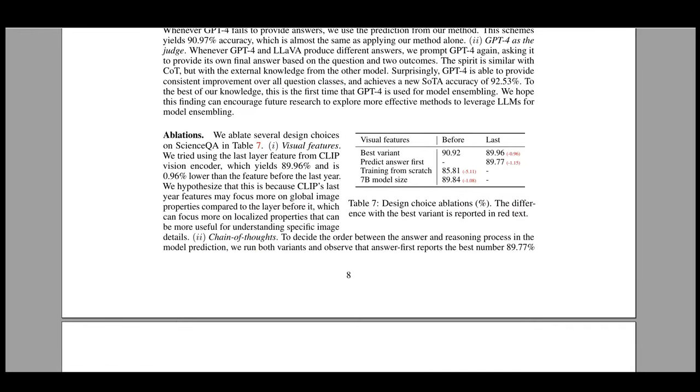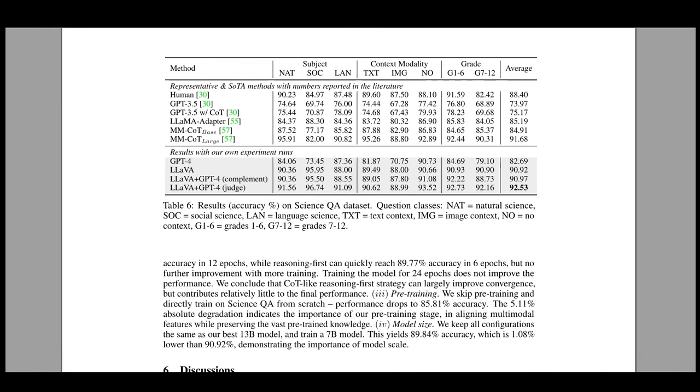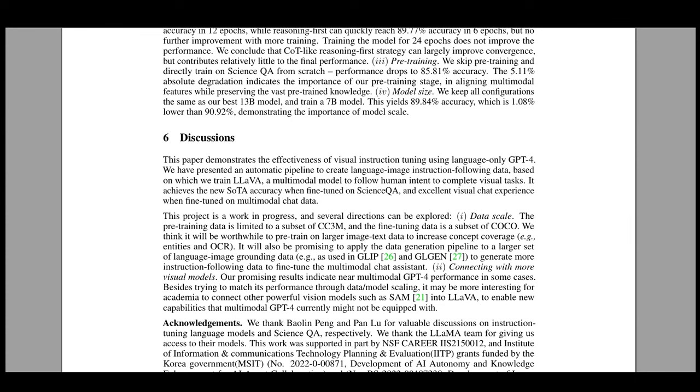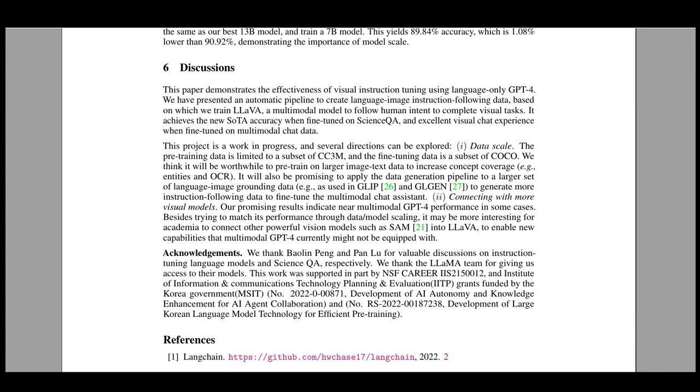When it comes to science question answering data set, they are categorized into different categories like natural science, social science, and language science. And under each of the categories, we can see that LAVA performs better than the GPT-4 model, which is quite impressive for an open source model. So definitely the model seems to have conversational abilities and also has produced results that is state of the art compared to GPT-4.